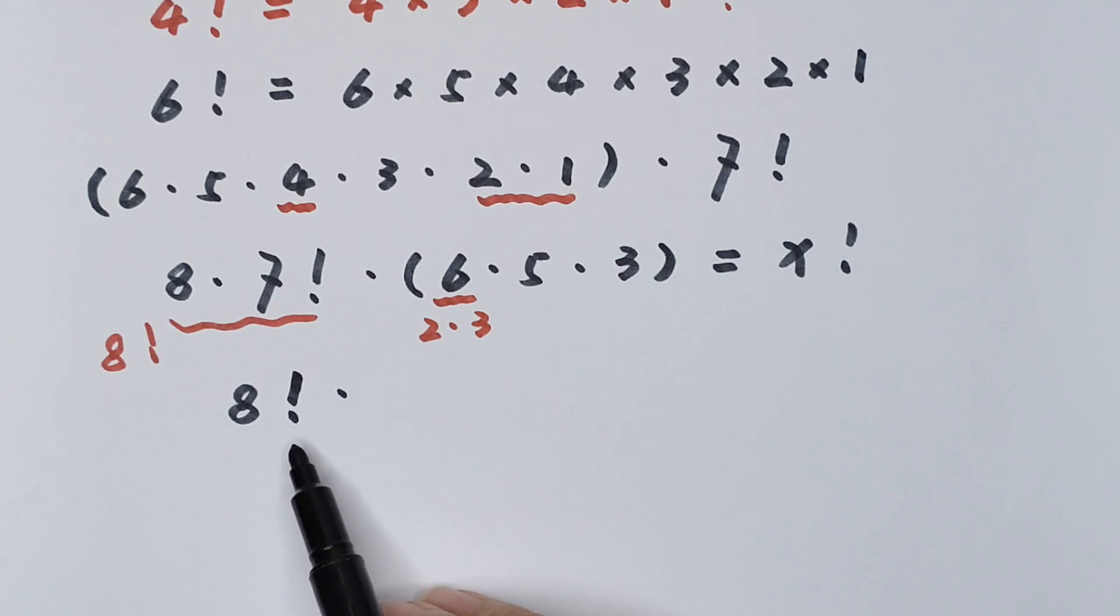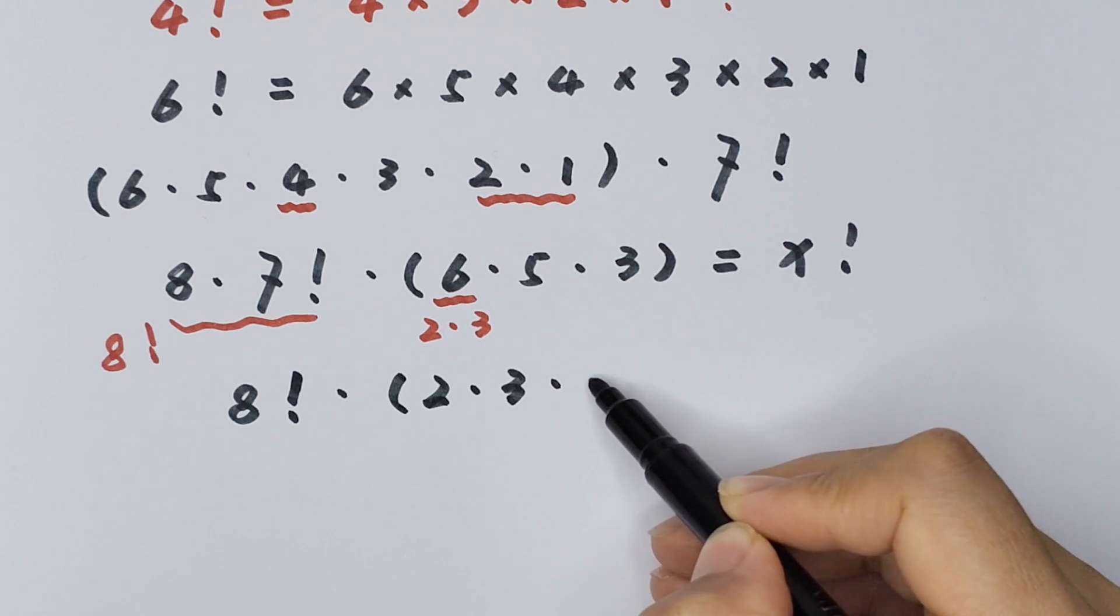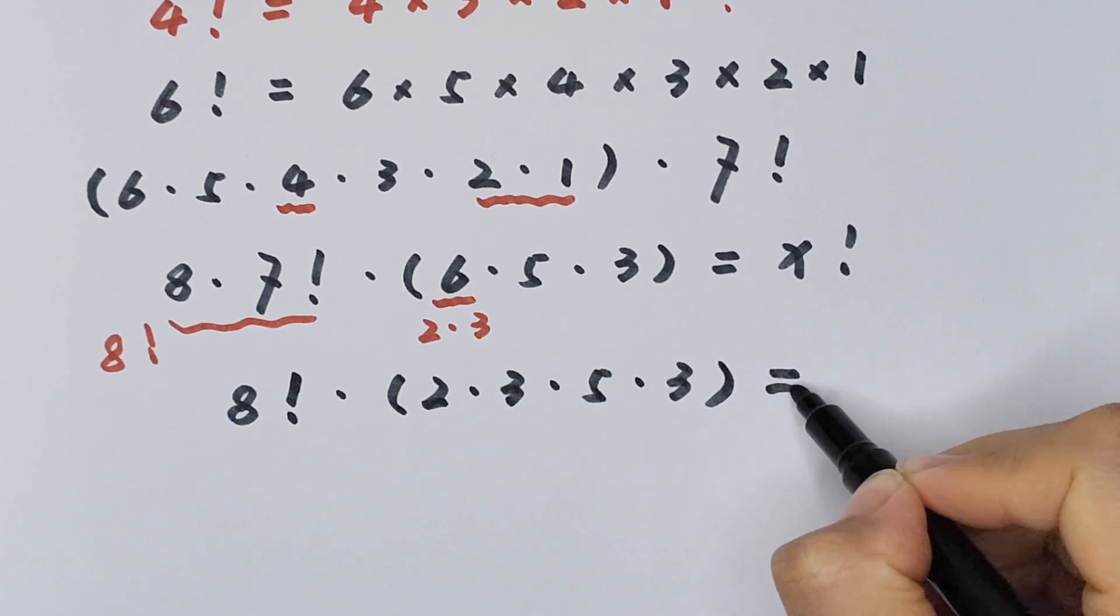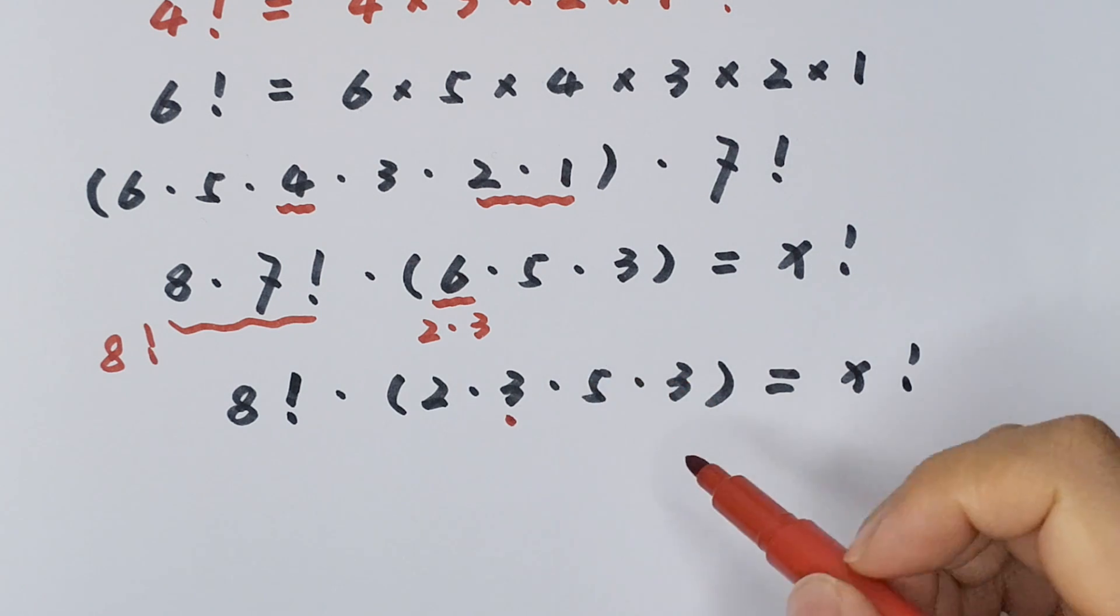8 factorial times 2 times 3 times 5 times 3 equals x factorial. And here, 3 times 3 is 9.